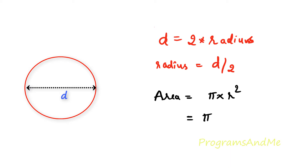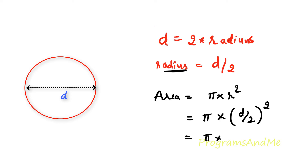So when radius is not given and instead diameter is given, r is nothing but d divided by 2. So we substitute: pi into (d/2) whole squared, which gives us pi into d squared divided by 4. So this is the formula for area when diameter is given.